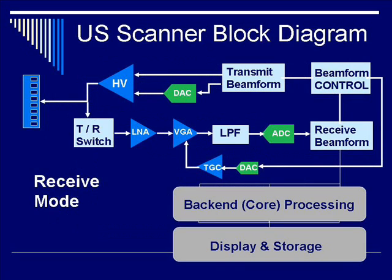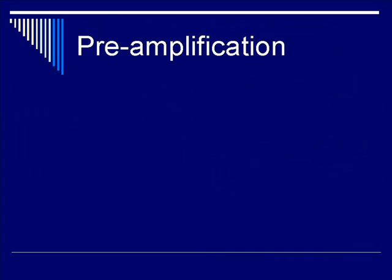Here again is the block diagram of the ultrasound scanner. During receive mode, you start off at the transducer end which receives the echoes from the various reflectors, as denoted by the red. It fans out to all the transducer elements, which in turn feeds in through the transmit-receive switch. In this case, the receive switch is turned on. The aggregate signal is then fed into the low noise amplifier, which we'll talk about in more detail under pre-amplification.